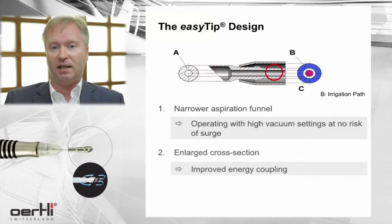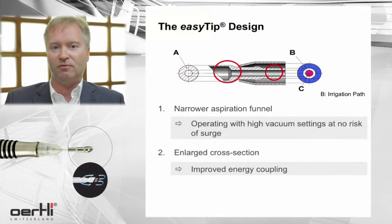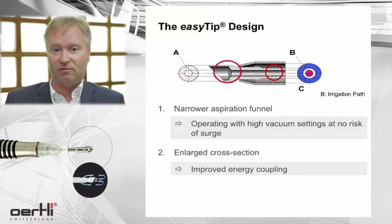The second change that has been made is at the mouth of the Faco tip — this has been enlarged. And the area that is responsible for phaco multiplication and energy coupling has been enlarged therefore.